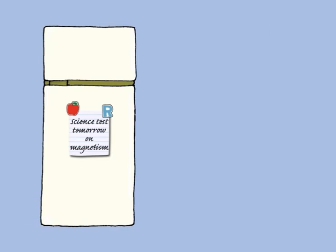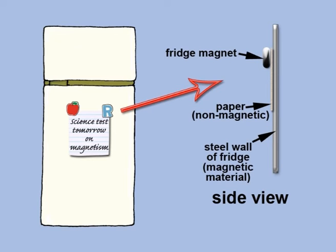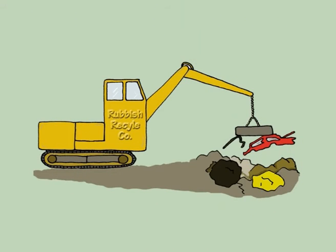That is why you can use fridge magnets to attach notes to a fridge. The fridge is made of steel and so the magnet sticks to it, even though there is a layer of paper between the magnet and the fridge.